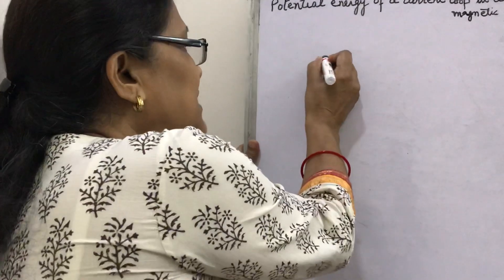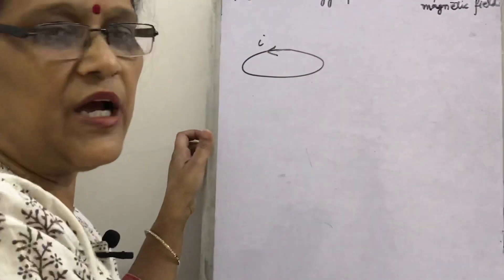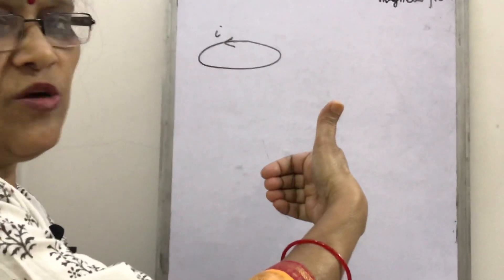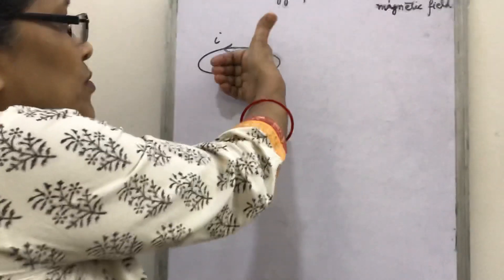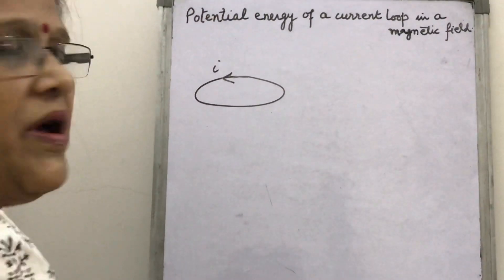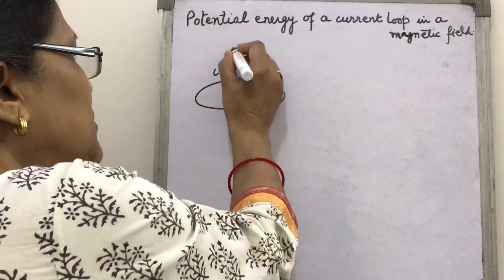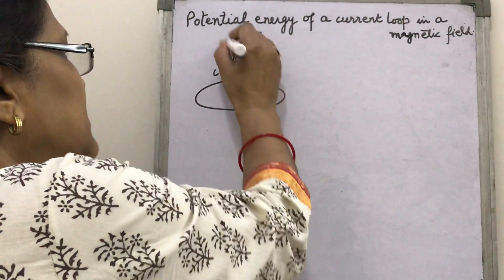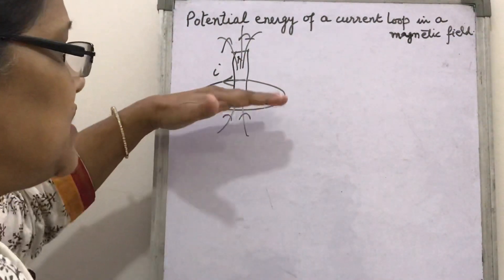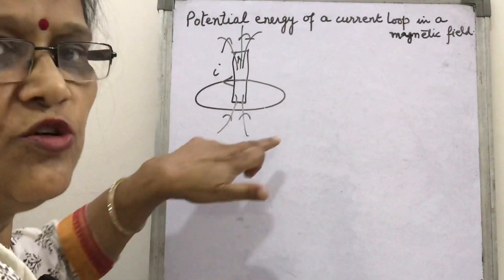Suppose this is the current loop and current flows in this direction. How does it behave like a magnetic dipole? The magnetic field of a loop is determined by the right hand thumb rule. If you curl your fingers in the direction of current, the thumb points upward. So the magnetic field is upward — magnetic field lines originate from the upper face, meaning the upper face is the north pole, and magnetic field lines enter from below.